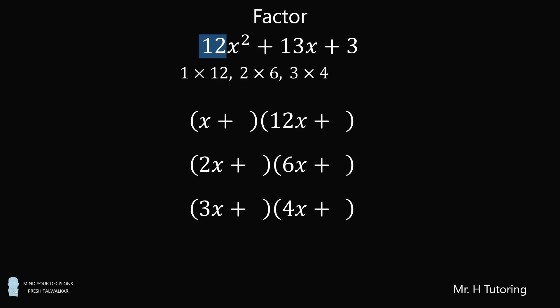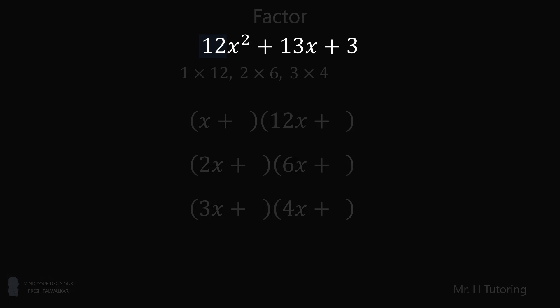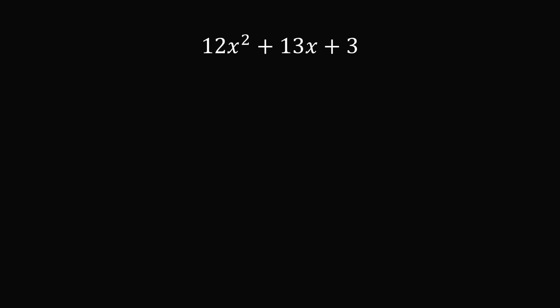I credit the video by Mr. H Tutoring where I learned the trick. So let's factor 12x squared plus 13x plus 3. We will take the coefficient on x squared and slide it over to the constant term 3. So we take 3 times this factor of 12. We now analyze a new quadratic: x squared plus 13x plus 36. How do we factor this?